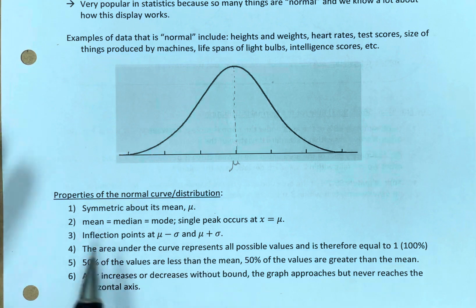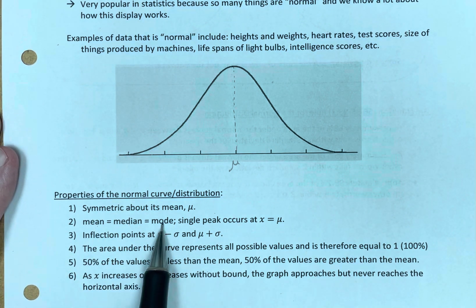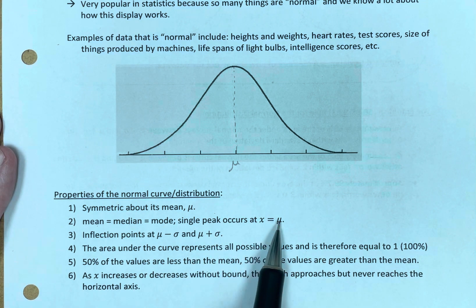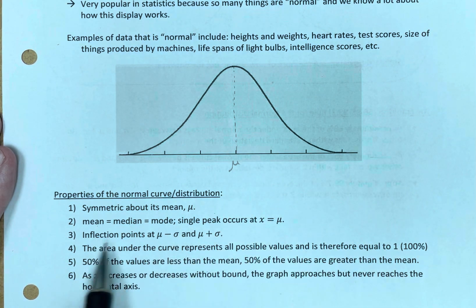In a normal distribution, the mean is equal to the median, is equal to the mode. We have a single peak, and it occurs at x equals μ, at x equals the mean.